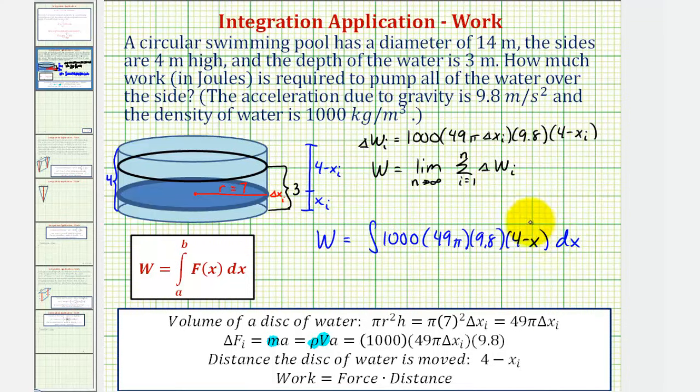So the actual work required to pump this water over the top is equal to the integral of 1,000 times 49 pi times 9.8 times 4 minus x times dx. Now for the limits of integration, notice how the distance is 4 minus x. So when x is zero, the distance would be 4, or 4 meters, which is the distance from the bottom of the pool. And we have 3 meters of water. So the upper limit of integration will be 3. Notice when x is 3, the distance is 1 meter, the distance the top water has to travel to the top of the pool.